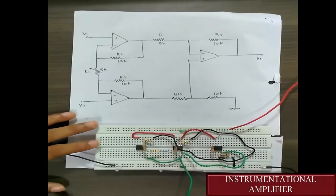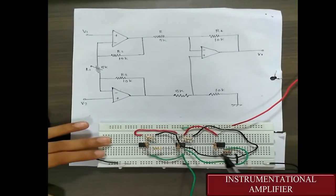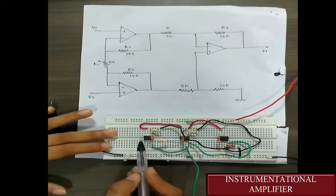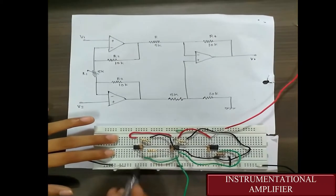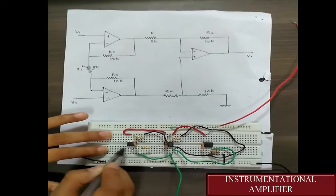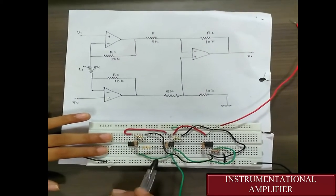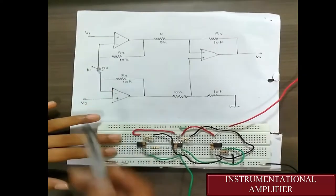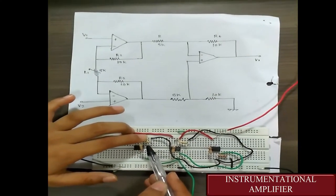This is the breadboard implementation of the instrumentation amplifier. These are three IC741 which are operational amplifiers. This is the first one, that is V1. We are giving input at this terminal, that is the third terminal, that will be V1. Here we are connecting 10k resistors which are acting as feedback resistors. This is R2. This resistor here is R1.